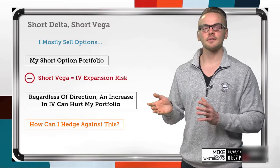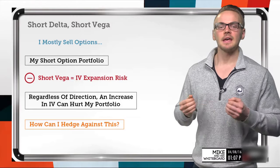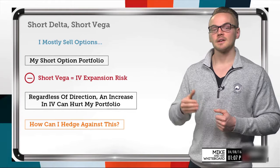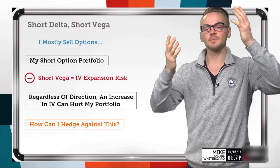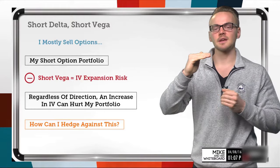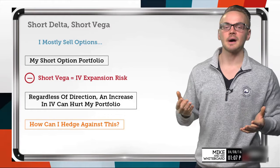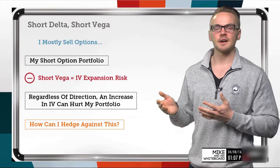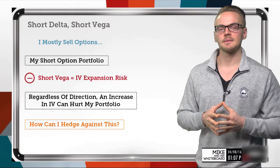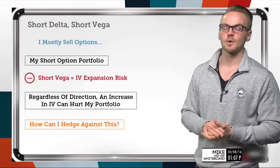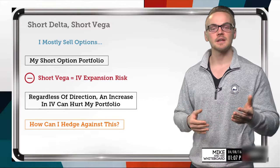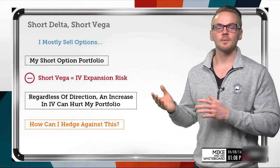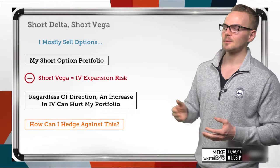What can happen when we have an IV expansion? If I have a lot of short premium, part of what implied volatility does is give us an idea of what option prices are doing. If implied volatility is increasing, that usually tells me option prices are increasing as well. So if I sold premium at one level and option prices are now higher because implied volatility increased, that's going to put me at a loss — I'd have to buy it back at a higher price for a net loss. Regardless of direction, an increase in IV can hurt my short premium portfolio, whether I have a bullish or bearish assumption.